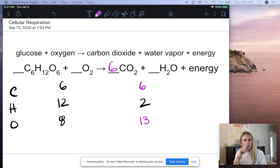We have 12 on the reactant side and only two on the product side. So in order to get 12 on the product side as well, I'm going to put a six in front of here. And let's do that in a different color. So it's a little bit easier to see. I'm going to put a six in front of this water, H2O.